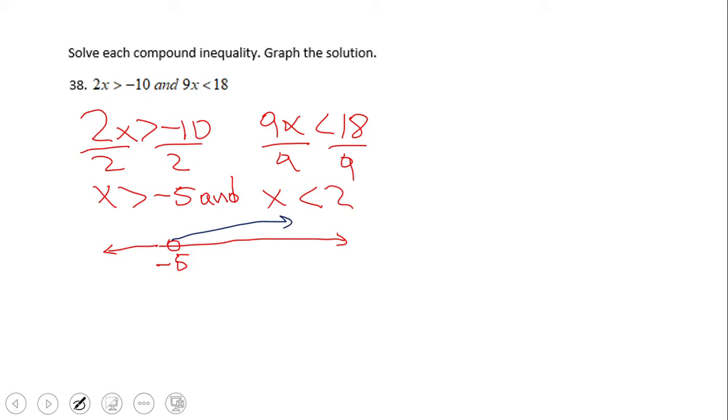This one, the first solution set, shows us the numbers greater than negative five. The second one shows us numbers less than two. And on this 'and' compound inequality, probably the best way to see the solution set is by drawing these two vertical lines. That will give you what they have in common because that word 'and' means intersection - what they have in common.